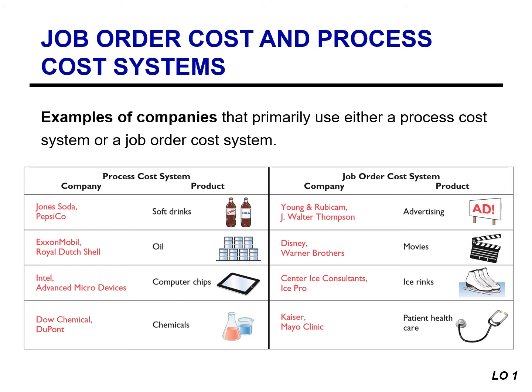If you are manufacturing identical products that are mass produced, you will use a process cost system. If, however, you are producing different products with different production requirements, you will use a job order cost system.